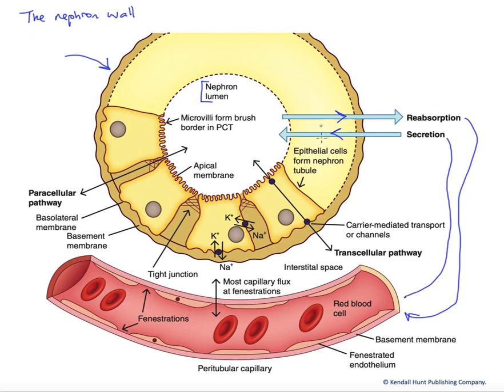Now, if we look at the wall of the nephron here, there are really two pathways across this barrier. There's a paracellular pathway and a transcellular pathway.